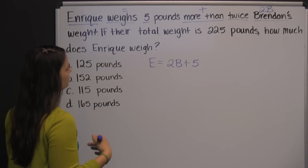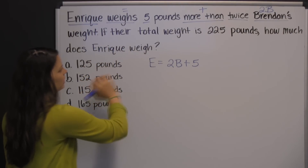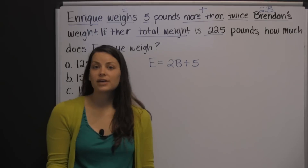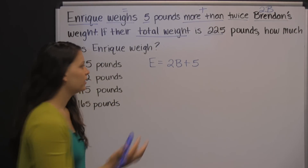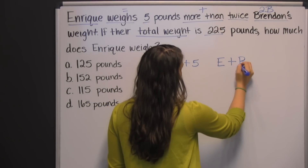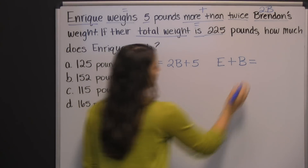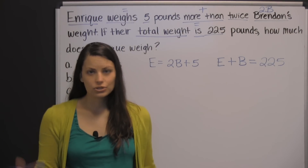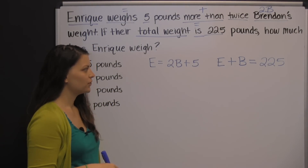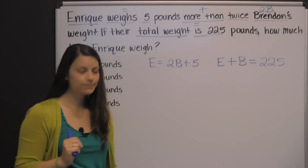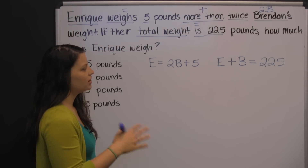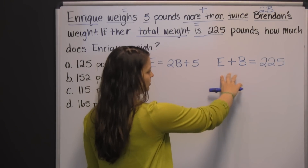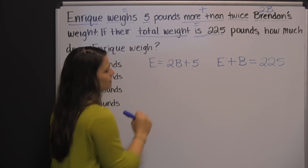That's our first equation. Our second sentence gives us our second equation. If their total weight is 225 pounds, how much does Enrique weigh? 'Total' tells you to add — Enrique's weight plus Brendan's weight. 'Is' tells us an equal sign: E plus B equals 225. How are we supposed to solve these two equations? They each have two different variables. You could graph both equations, use elimination — but they're not really set up for that since the 2B isn't isolated on the same side in the first equation. So what they're set up to do is substitution.